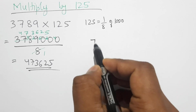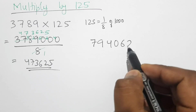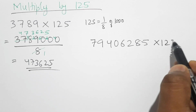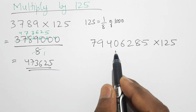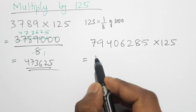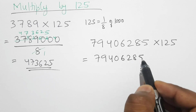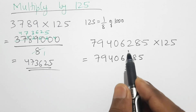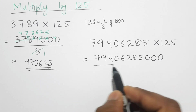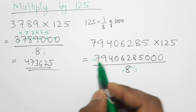This time let's take the larger number 79406285 and multiply by 125. In our usual method this would take around five minutes, but with our shortcut we multiply by 1000 first — put three zeros behind — and then divide by 8.